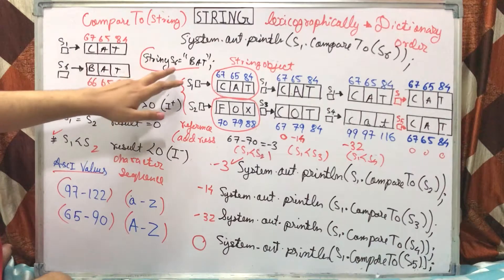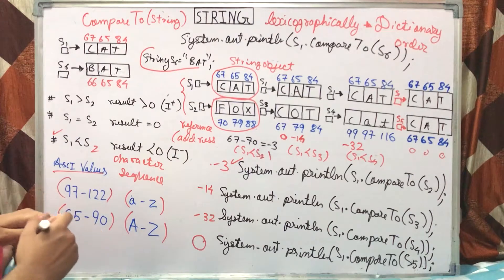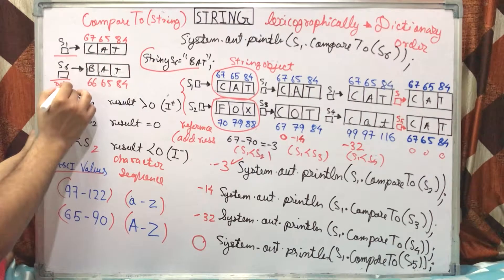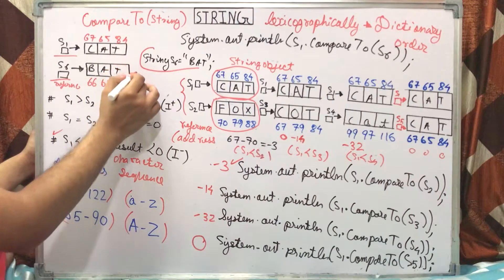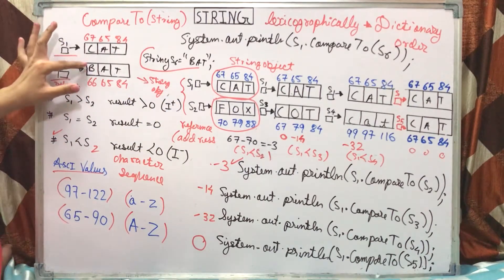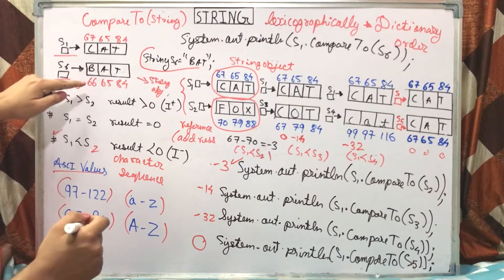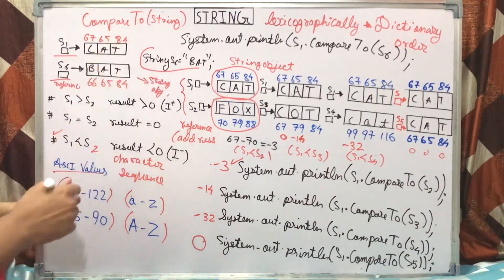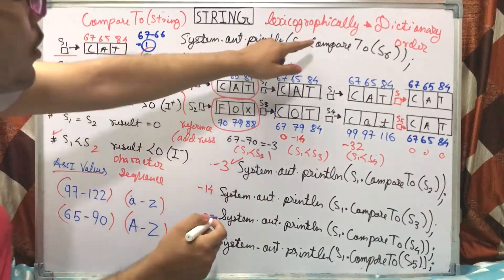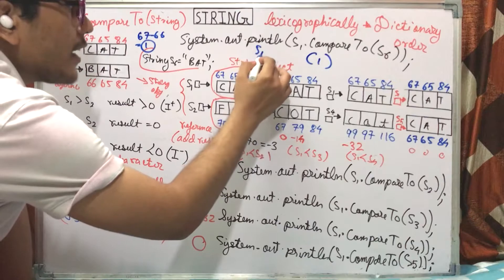Now let's see a positive value. We have a string S6 which is bat. So s1.compareTo(s6): S1 is CAT, S6 is bat. The first letter compare is C and B. C is 67 and B is 66. So the net result is 67 minus 66, which is 1. This means string 1 is greater than S6.